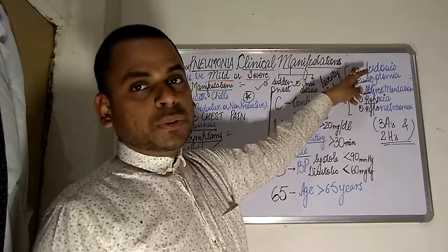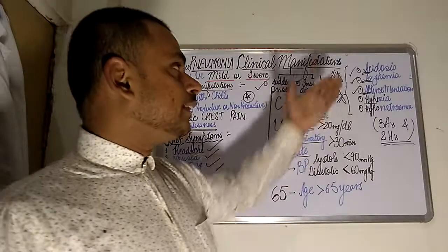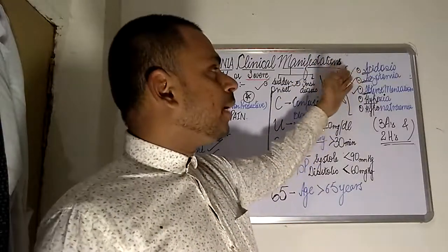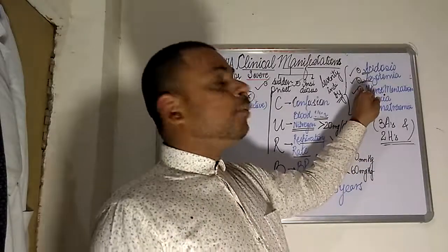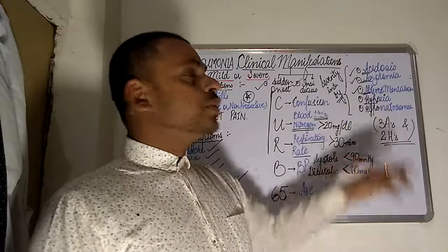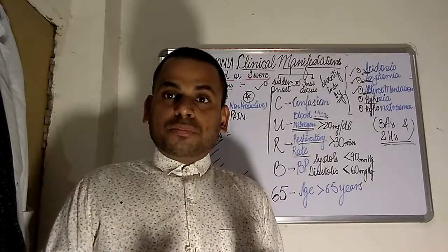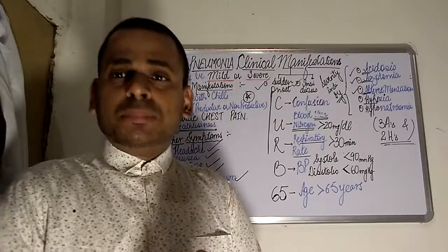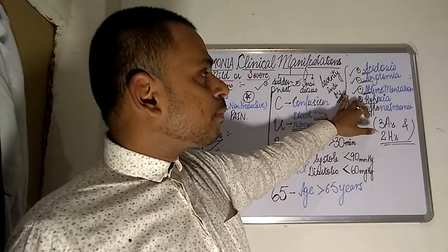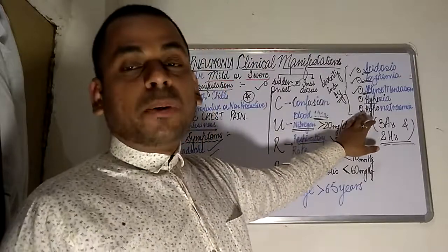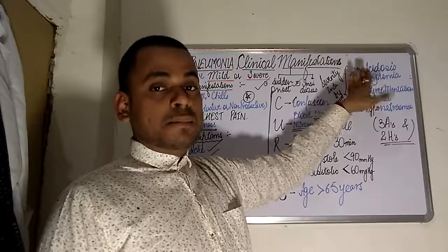The first A refers to acidosis — the patient's blood may show increased acidity. The second A is azotemia — the patient's blood nitrogen level is elevated. The third A refers to altered mentation — the patient may be in a state of confusion. Moving on to the two H's: the first H corresponds to hypoxia, and the second H corresponds to hyponatremia.